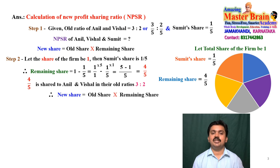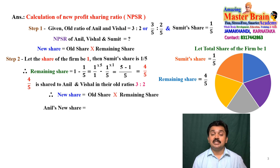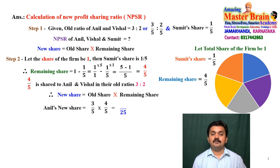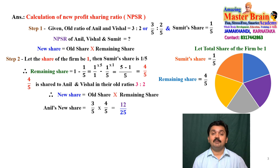The formula is: new share equals old share multiplied by remaining share. Aneel's new share equals his old share of 3/5 multiplied by the remaining share of 4/5. That is 5 × 5 = 25 in the denominator, and 3 × 4 = 12 in the numerator. Therefore, Aneel's new share is 12/25.